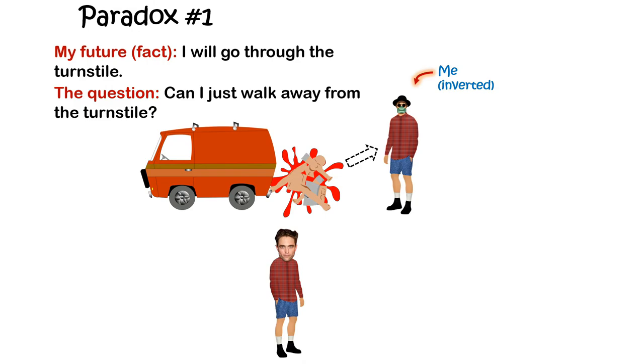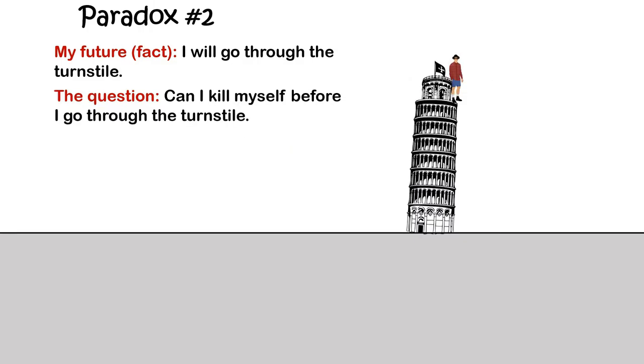Same goes for the second paradox. I either didn't see that inverted guy, or didn't realize that he is an inverted version of me. And if I did see and know he's me, then I simply won't do anything that could take my own life. I might have climbed to the top of the Tower of Pisa, but I won't jump off.